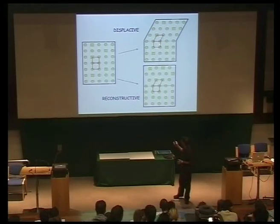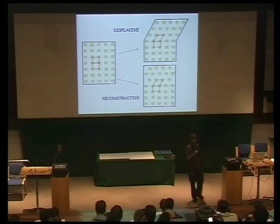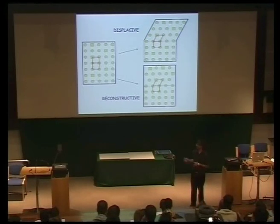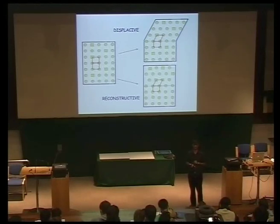The shape of the transformation product must be a plate in the displacive case. So every time you see a plate-shaped product, it's likely to have formed by this mechanism, which involves systematic displacements.